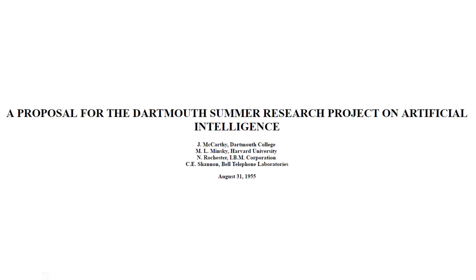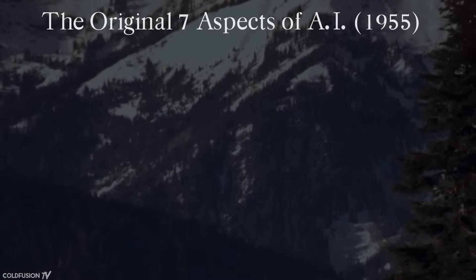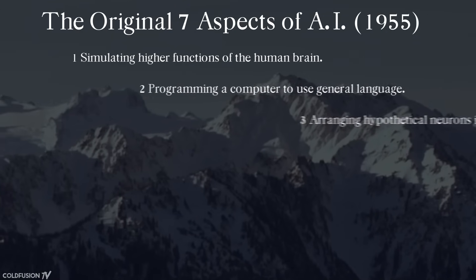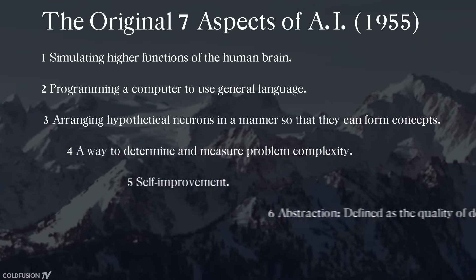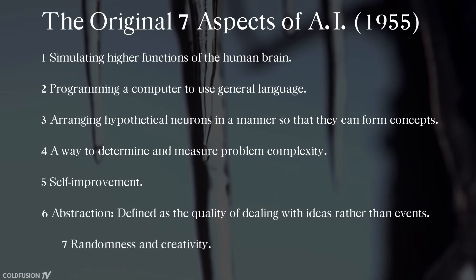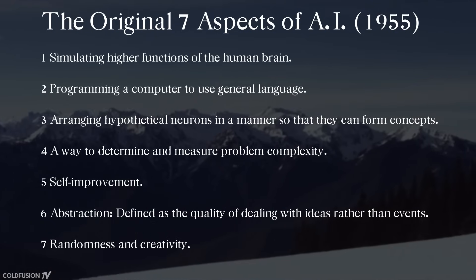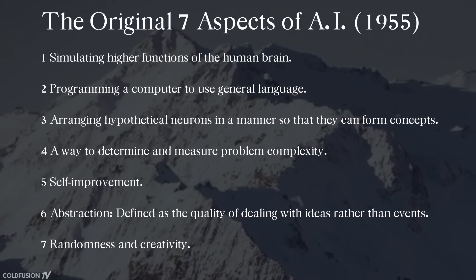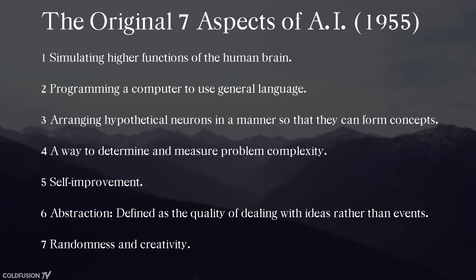To elaborate further, the 1955 proposal defines seven areas of AI. Today there's surely more, but here are the original seven. One: simulating higher functions of the human brain. Two: programming a computer to use general language. Three: arranging hypothetical neurons in a manner enabling them to form concepts. Four: a way to determine and measure problem complexity. Five: self-improvement. Six: abstraction, defined as the quality of dealing with ideas rather than events. Seven: randomness and creativity.